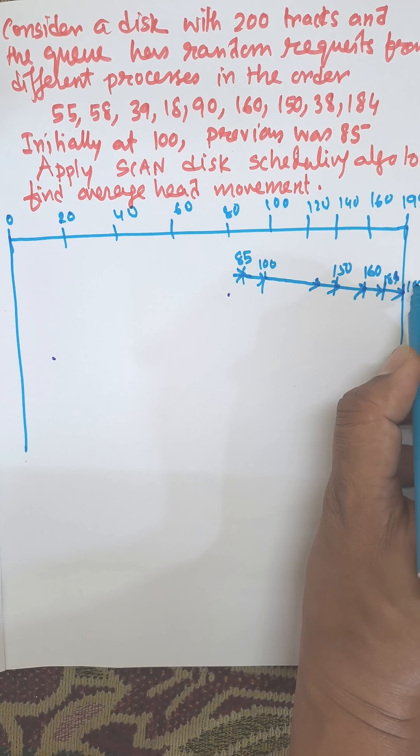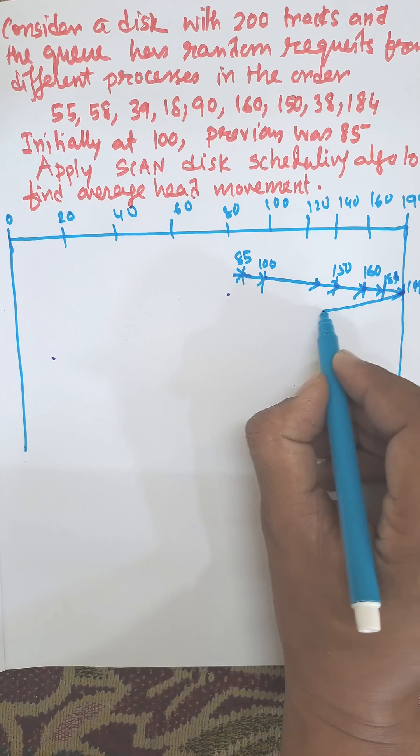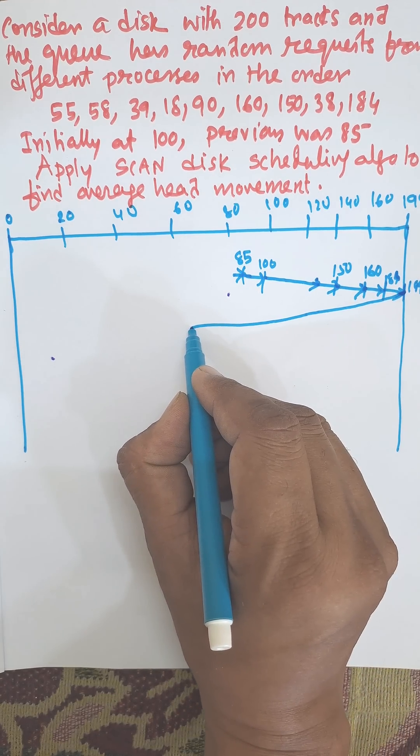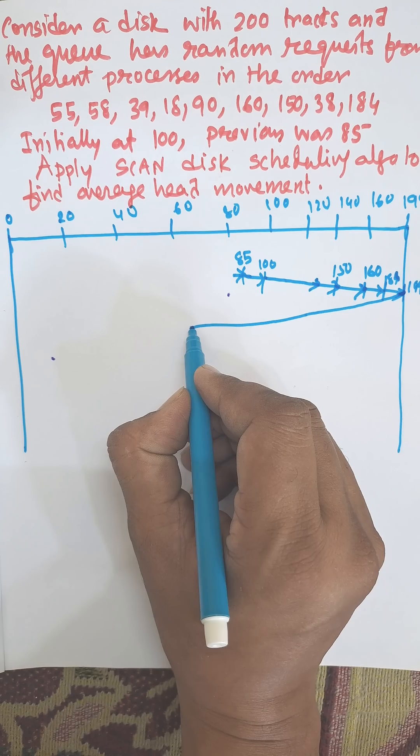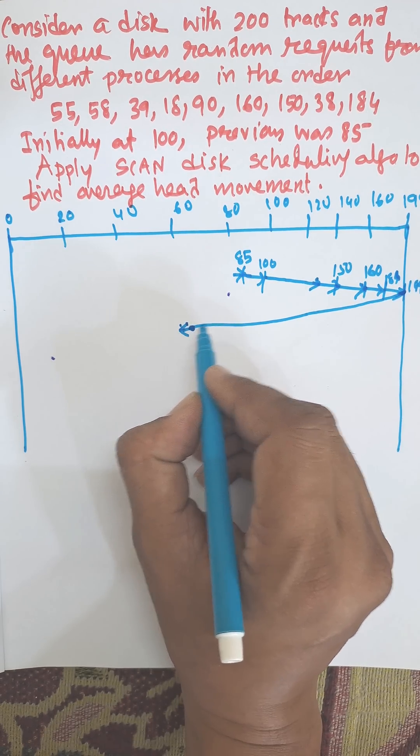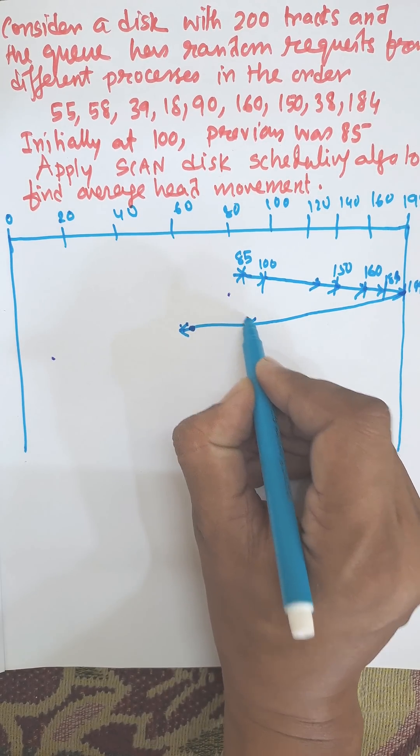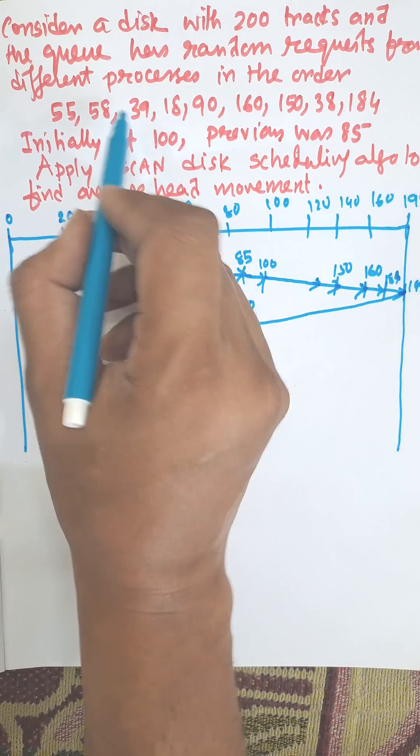So you need to calculate 199 also. From 199 it will return to the next. First of all, it will visit 90.